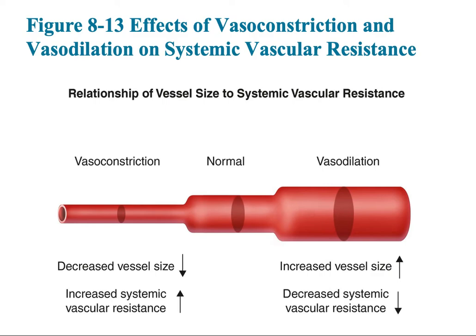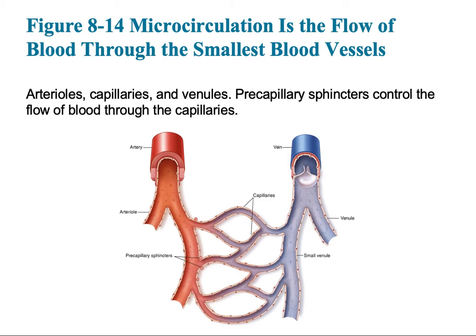Blood vessels have smooth muscle within the arteries that maintains a constant dynamic flux to sustain blood pressure. As you sit, vessels may be slightly dilated; as you move and stand, vasoconstriction occurs and then returns to normal. When this muscle contracts, it changes the lumen or diameter of the vessel, adjusting the conduit size to allow for normal blood pressures and homeostasis.